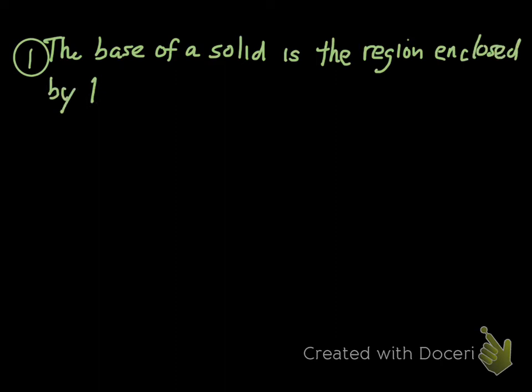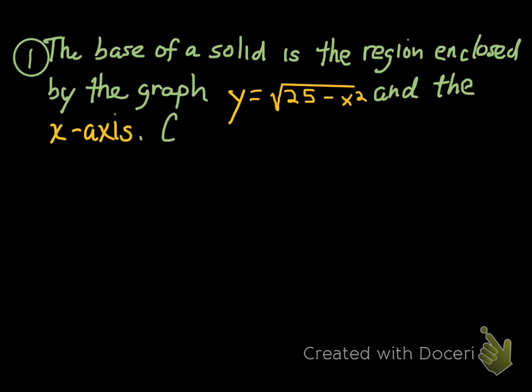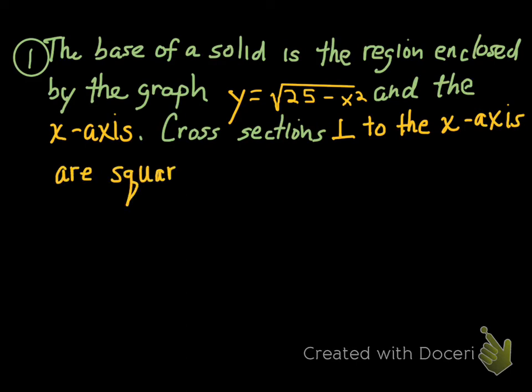So, the words here kind of set up everything you need to know. As I read this, it says the base of a solid is the region enclosed by the graph of y equals root 25 minus x squared and the x-axis. The cross-sections we're going to utilize this time are the shapes we're going to build onto that foundation that are going to run perpendicular to the x-axis and they're going to be squares.